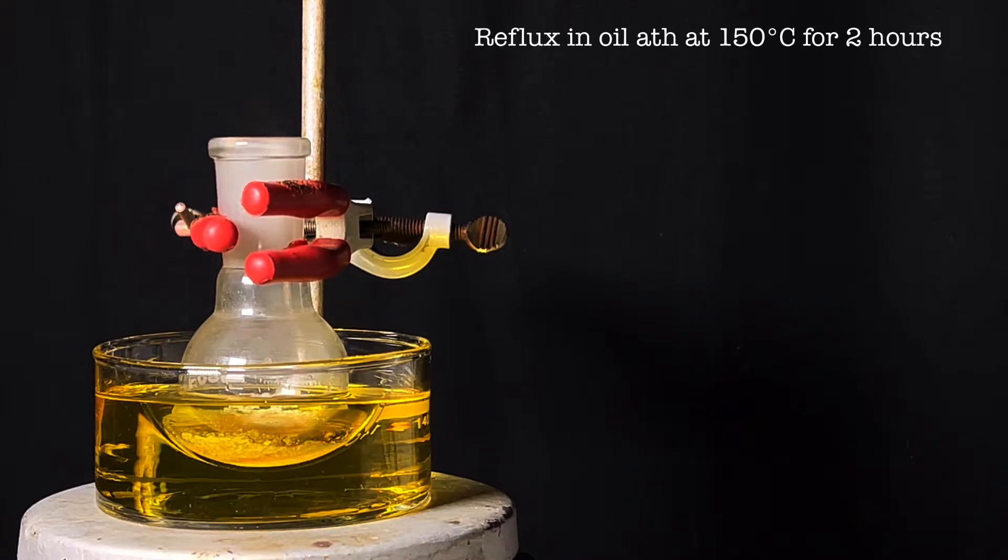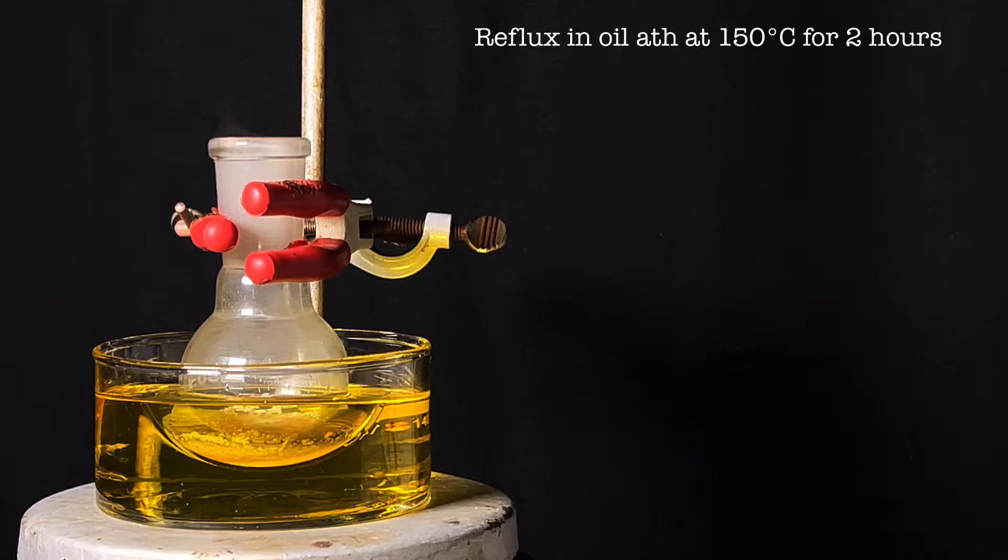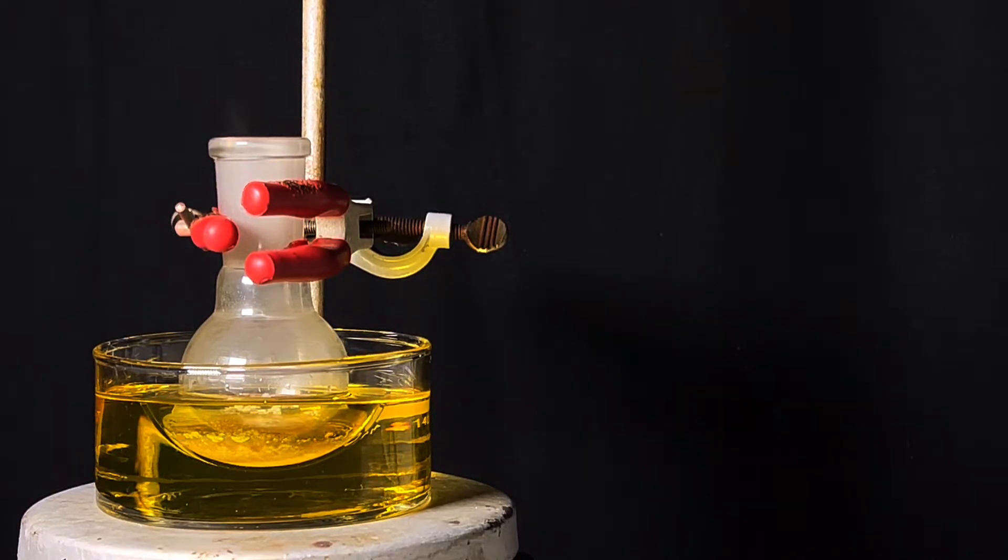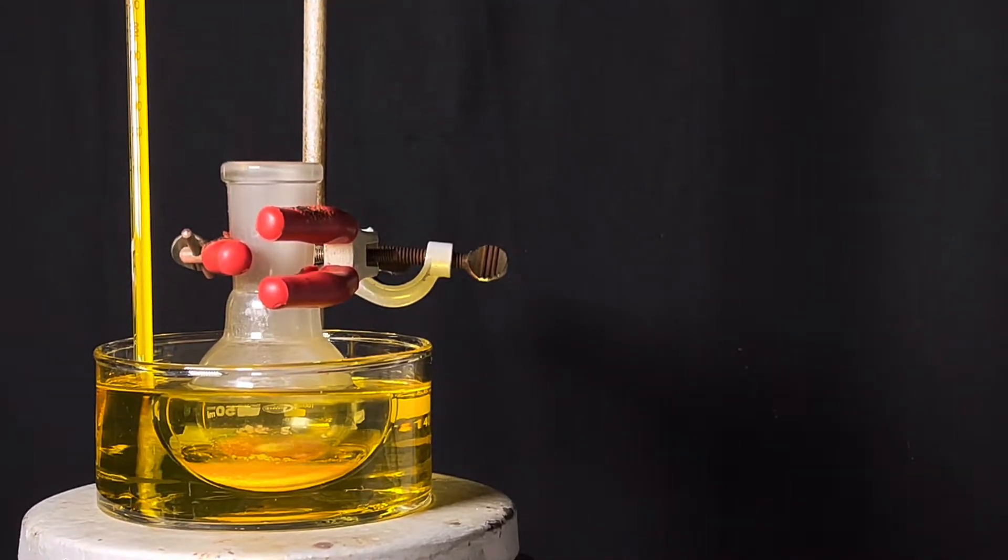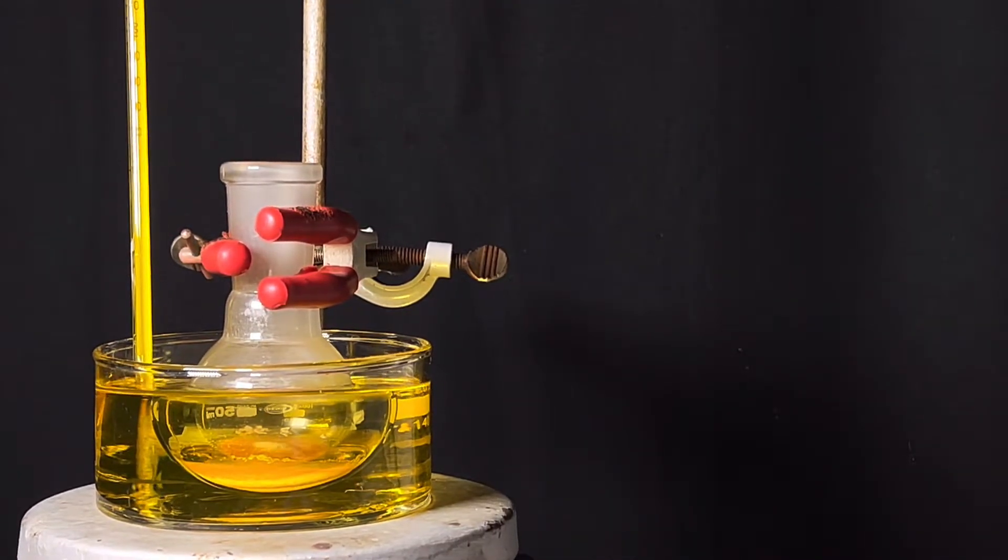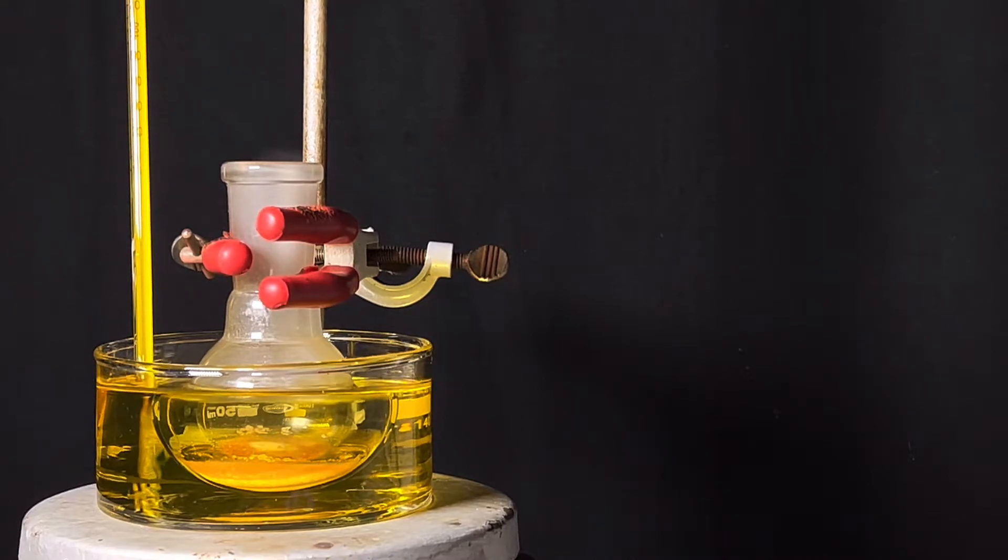Next, the round bottom flask was immersed in an oil bath and heated to 150 degrees Celsius. A small stirring bar was put in the round bottom flask and the mixture was continuously stirred. A thermometer was inserted into the oil bath to monitor the temperature. The mixture was heated for 2 hours.